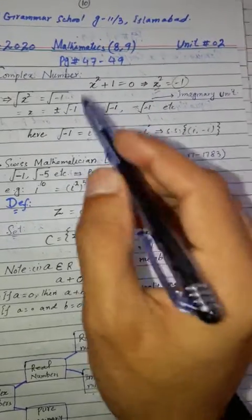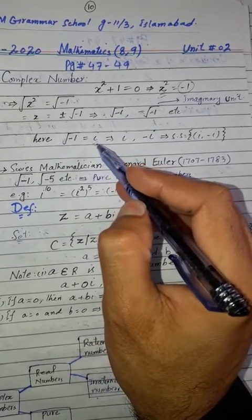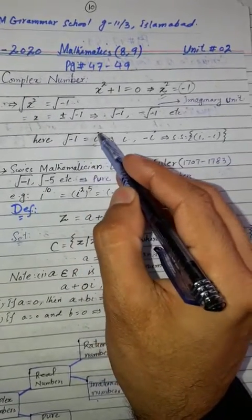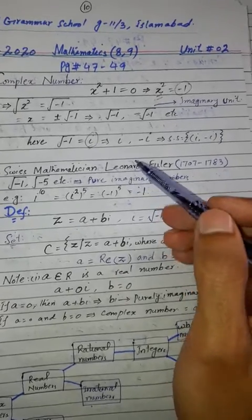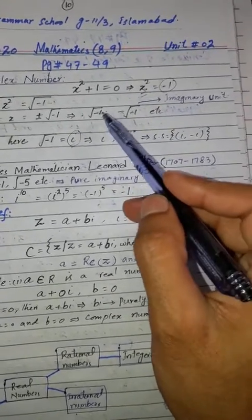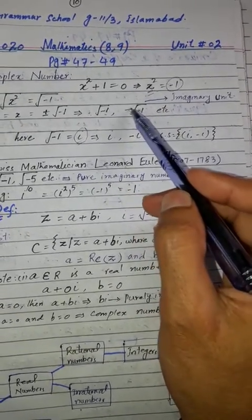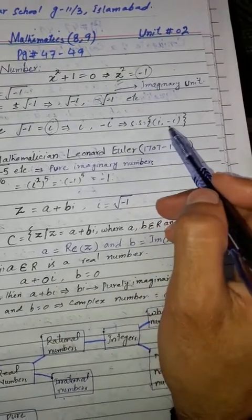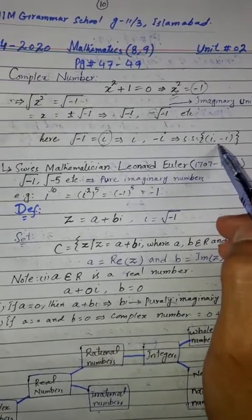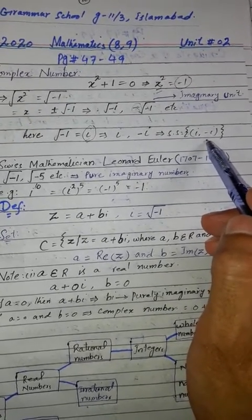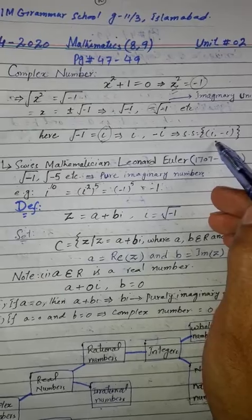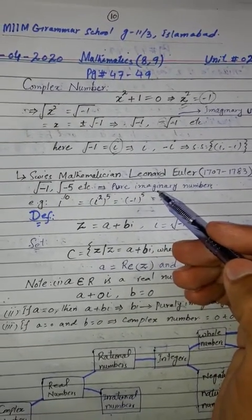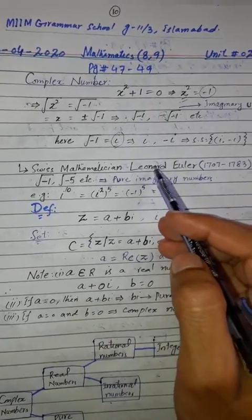So iota squared equals minus 1, and the square root of minus 1 equals iota. This means the solutions are plus iota and minus iota. These values do not exist in the real number set, so a new set was developed, which is called complex numbers.